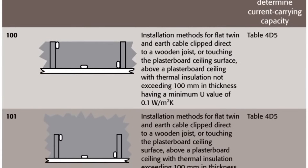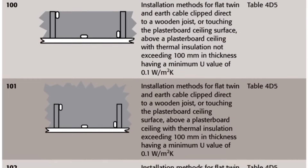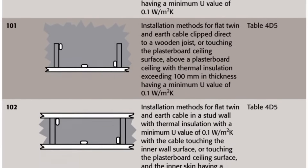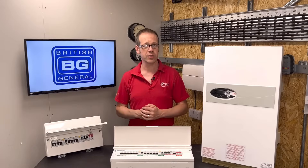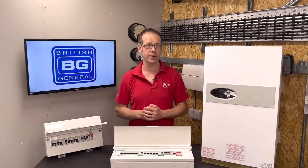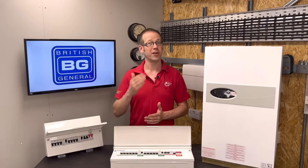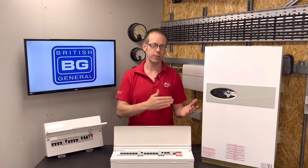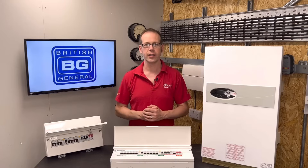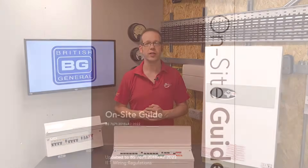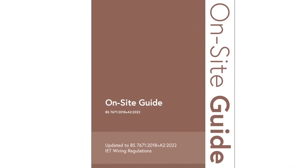How much current the cable can handle is directly related to how it's installed. To figure out what size of cable to install, we may need to take the factors we've just mentioned, as well as some others, in order to rate our cable. We refer to these as rating factors — you may hear some people call them correction factors because that's what they used to be called in older editions of the regulations. We find them in various documents but for now we'll stick to the ones in the on-site guide.